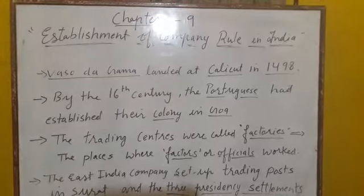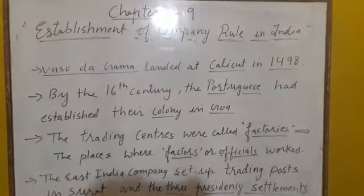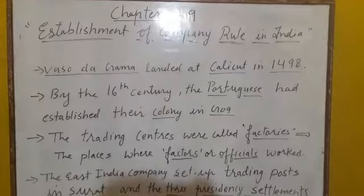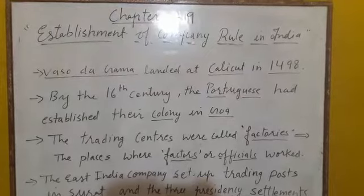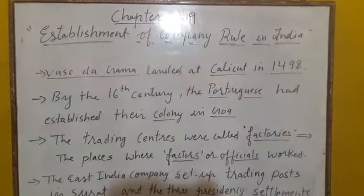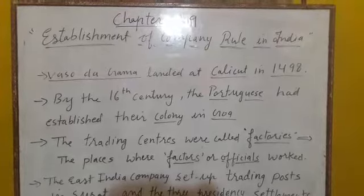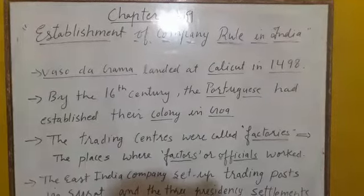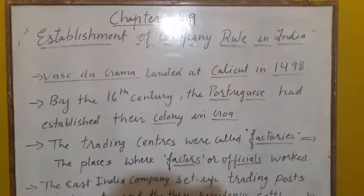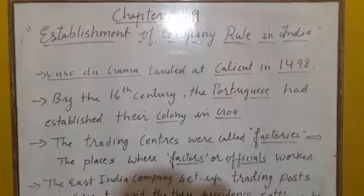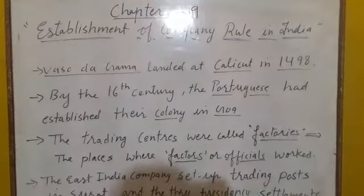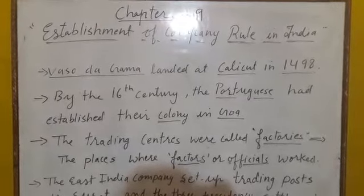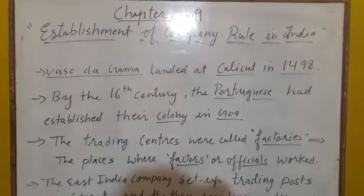Morning students. As lesson 8 has been completed, today we will start chapter number 9 — Chapter 9: Establishment of Company Rule in India. This chapter tells you the story of establishment of British rule in India and how they started their company or trade, meaning how different countries started their company or trade in India and took advantages.